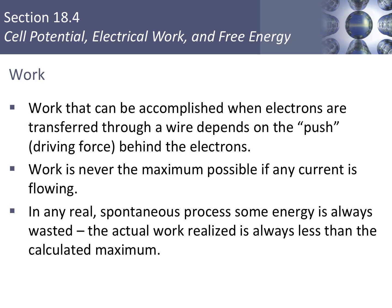In sections 2 and 3 of chapter 18, we talked about galvanic cells, which produce a current, and that current can be used to do work. The work that can be accomplished depends on the driving force of the electrons. We calculated the cell potential in sections 2 and 3. However, work is never the maximum possible — there is always going to be some waste. So actual work is always less than the calculated maximum.